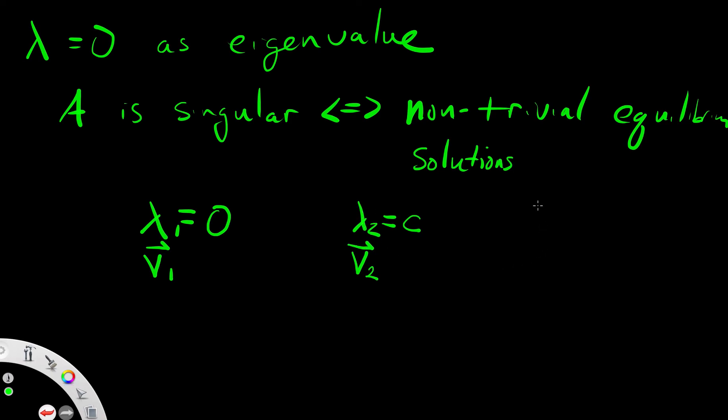There's my x and y axis. I am going to have a line of equilibrium solutions, where the slope of this line is given by V1, and along this line I have a series of equilibrium solutions.